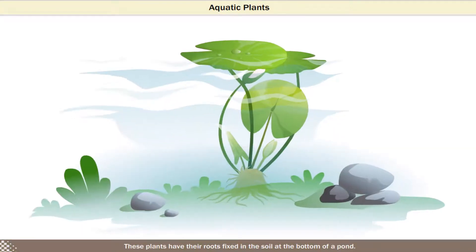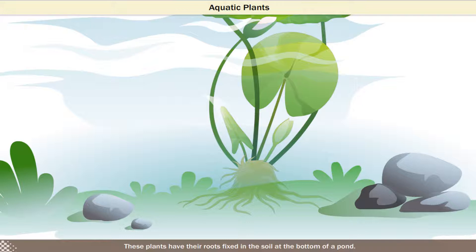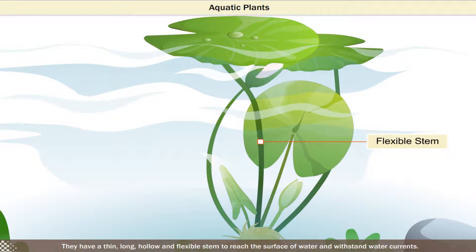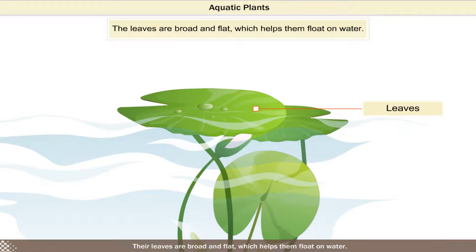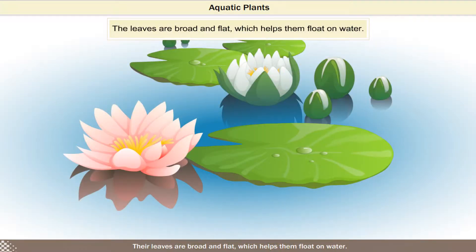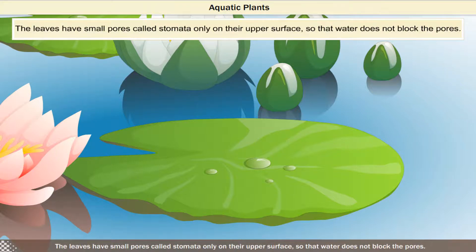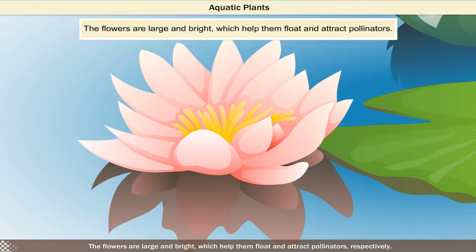The water lily and lotus are fixed plants. These plants have their roots fixed in the soil at the bottom of a pond. They have a thin, long, hollow and flexible stem to reach the surface of water and withstand water currents. Their leaves are broad and flat, which helps them float on water. The leaves are covered with a waxy coating, which prevents them from rotting. The leaves have small pores called stomata only on their upper surface, so that water does not block the pores. The flowers are large and bright, which help them float and attract pollinators, respectively.